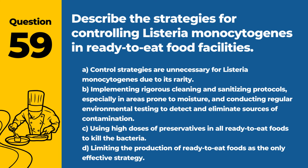Question 59. Describe the strategies for controlling Listeria monocytogenes in ready-to-eat food facilities. a. Control strategies are unnecessary for Listeria monocytogenes due to its rarity. b. Implementing rigorous cleaning and sanitizing protocols, especially in areas prone to moisture, and conducting regular environmental testing to detect and eliminate sources of contamination. c. Using high doses of preservatives in all ready-to-eat foods to kill the bacteria. d. Limiting the production of ready-to-eat foods as the only effective strategy. Answer: b. Implementing rigorous cleaning and sanitizing protocols, especially in areas prone to moisture, and conducting regular environmental testing to detect and eliminate sources of contamination. Preventative measures are crucial in controlling Listeria in food processing environments.